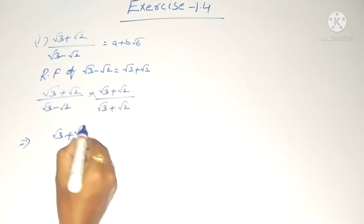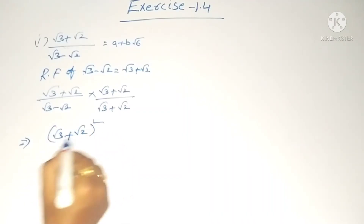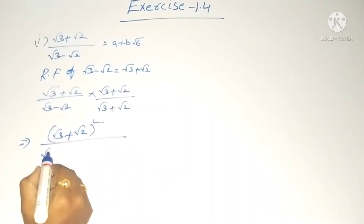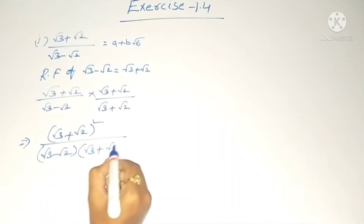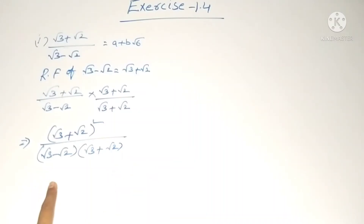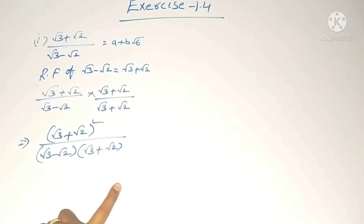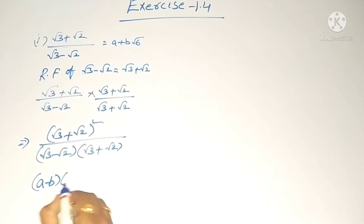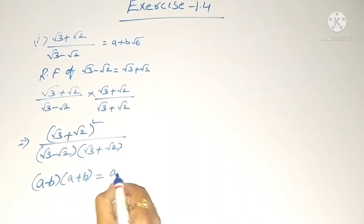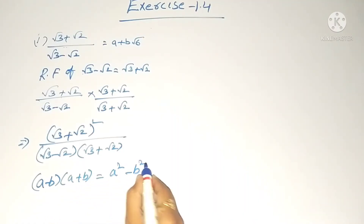The numerator becomes (√3 + √2) whole square. The denominator is in the form of (a − b)(a + b), so we apply the formula: (a − b)(a + b) = a² − b². In the numerator, we apply (a + b)² = a² + 2ab + b².